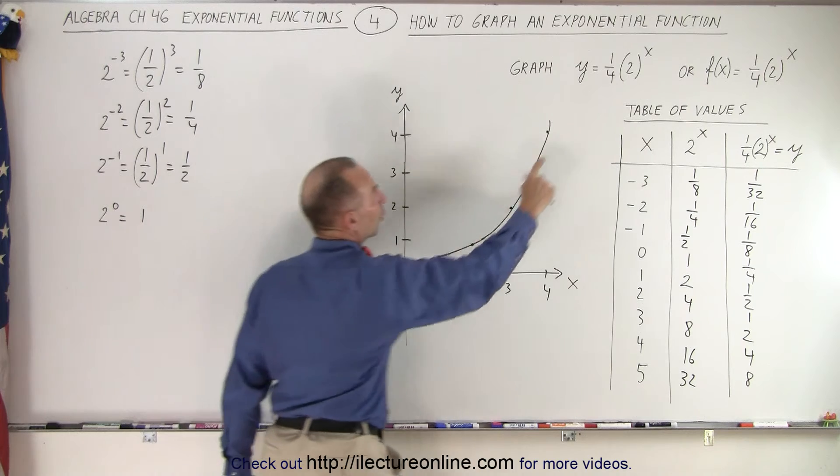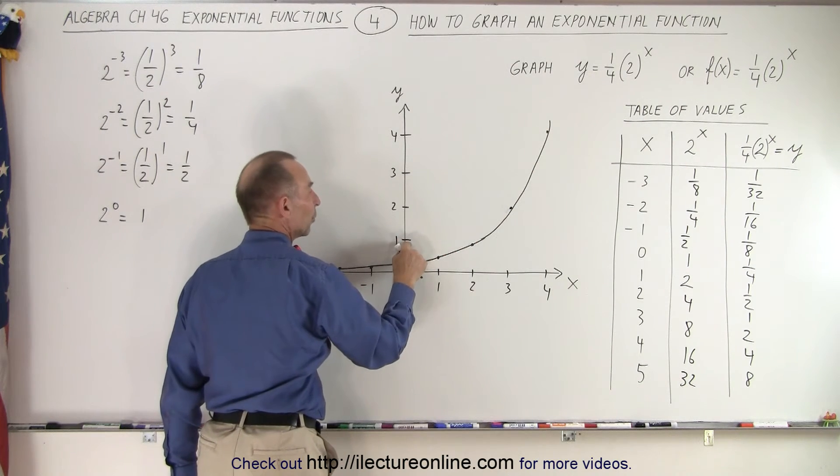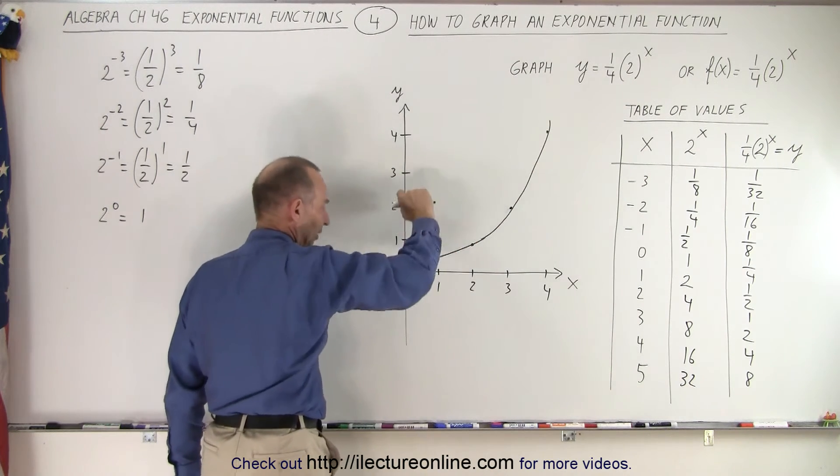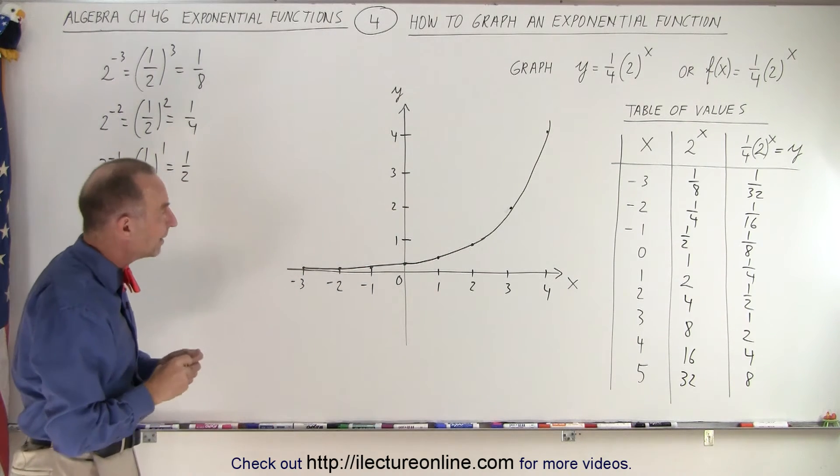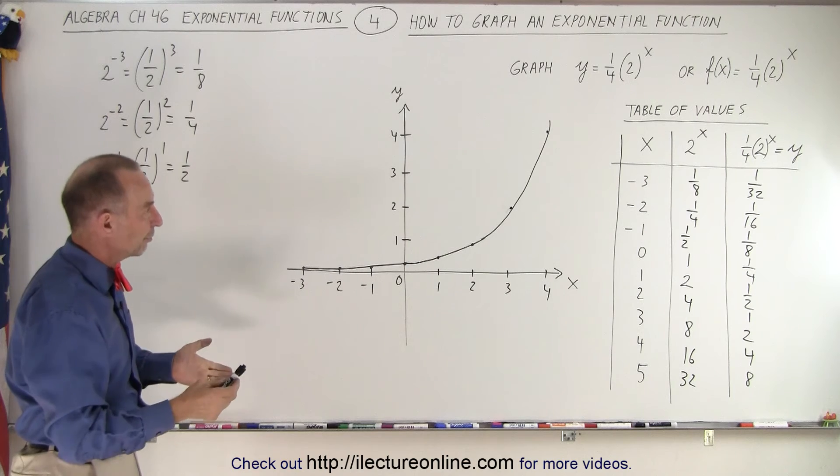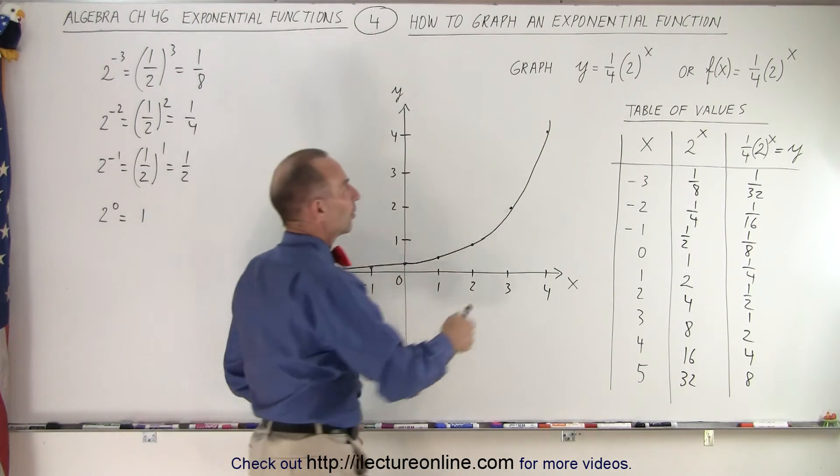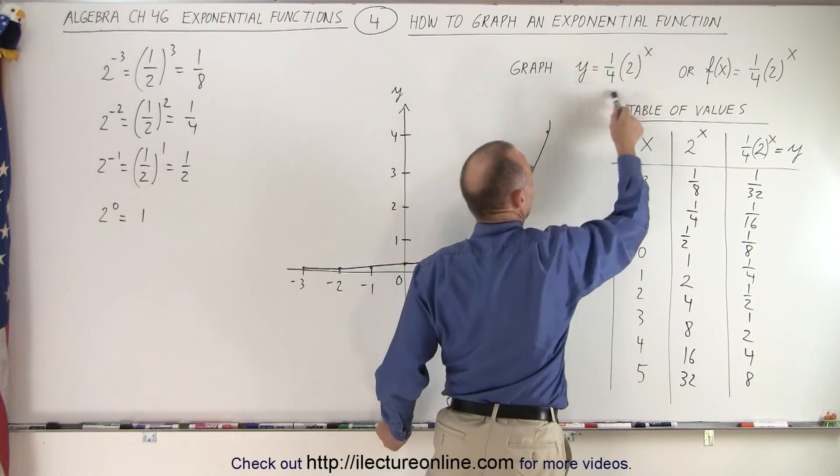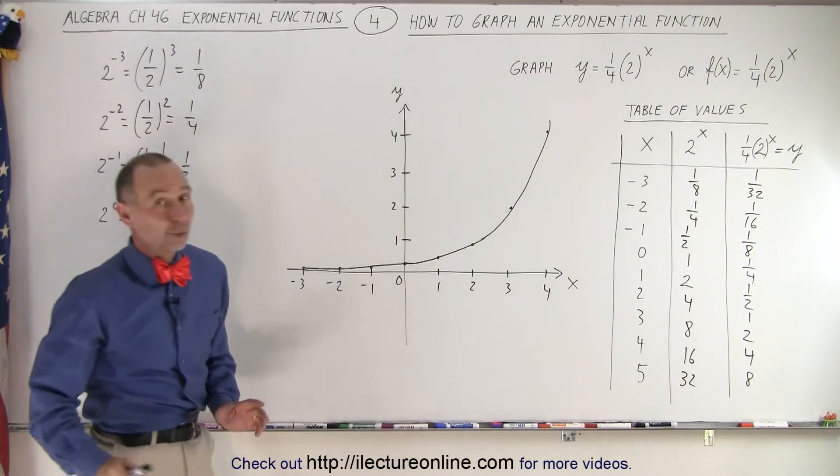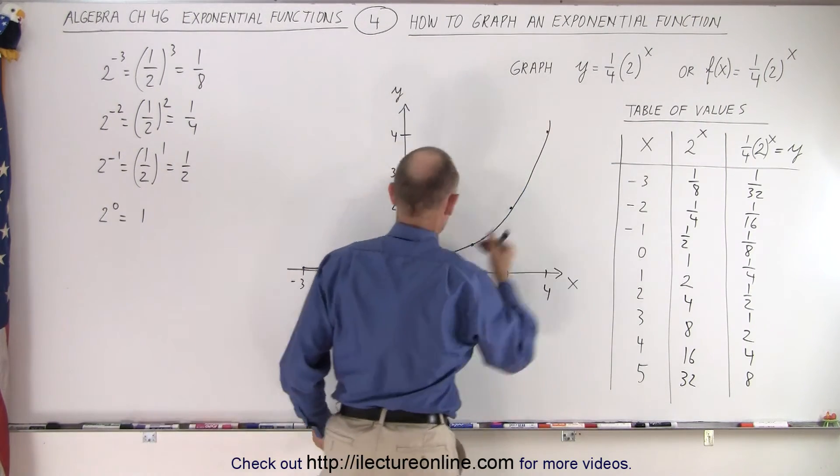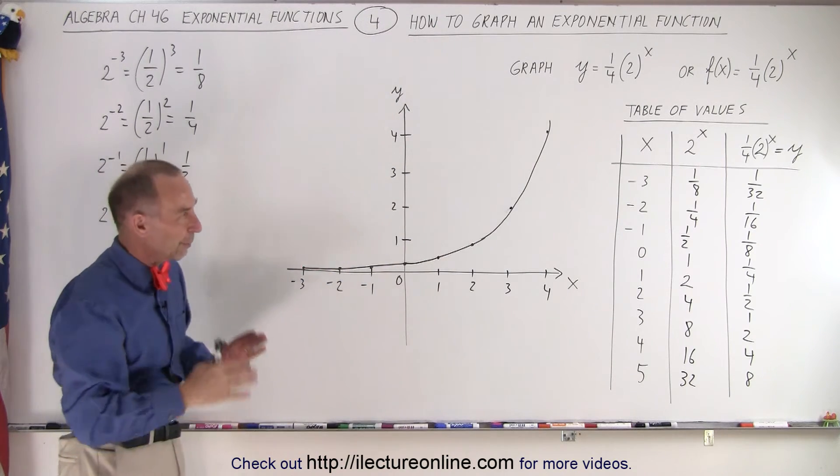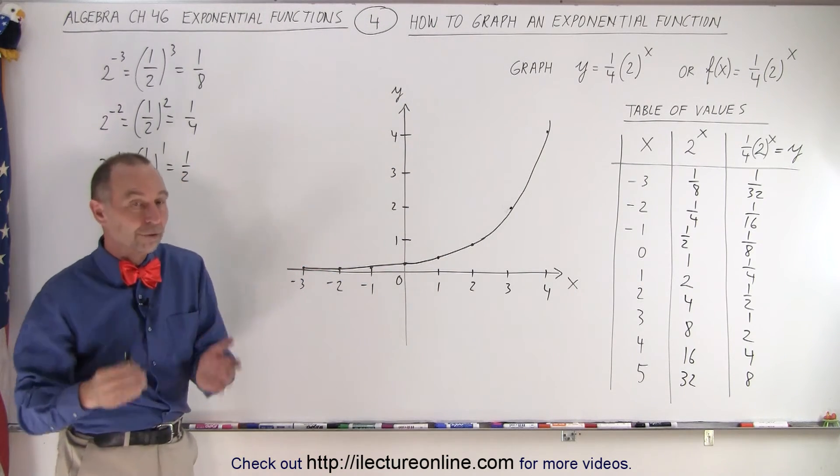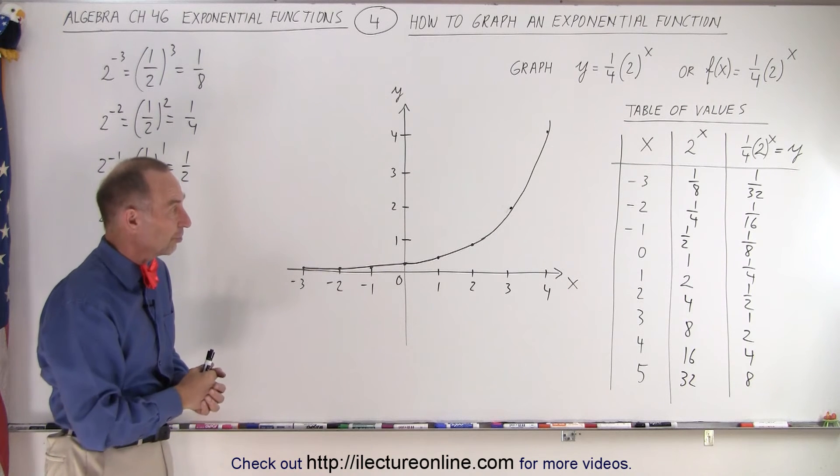Normally, when there's no coefficient in front, it goes to the point y equals 1. But since we have a one-fourth on there, it drops it down to one-fourth of 1, which is equal to one-fourth. And that is how you graph an exponential function that has both some constant to the x power and a number in front. Of course, if the number in front is bigger, let's say 2 or 3 or 4, then of course that would increase much faster. You'll see that later when we explain the differences, when the coefficient changes, and when the base changes as well.